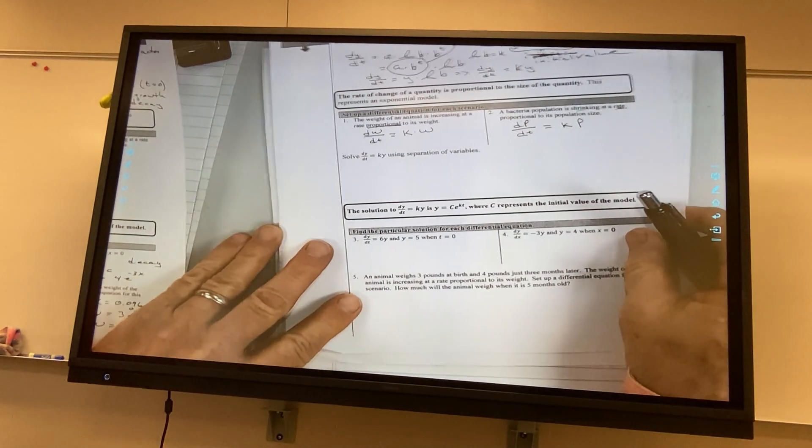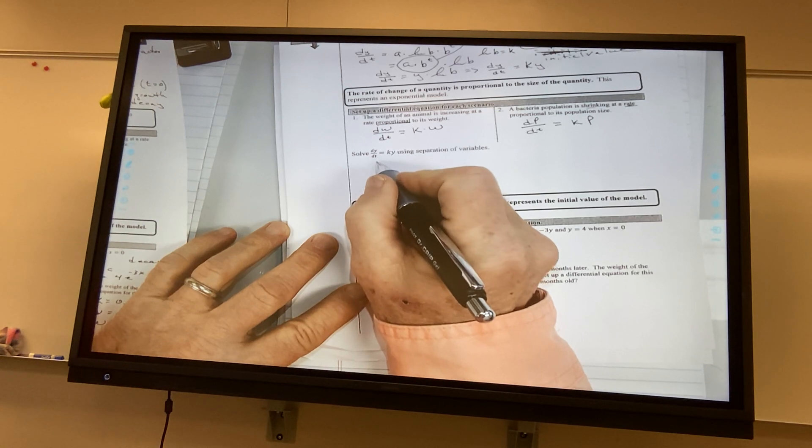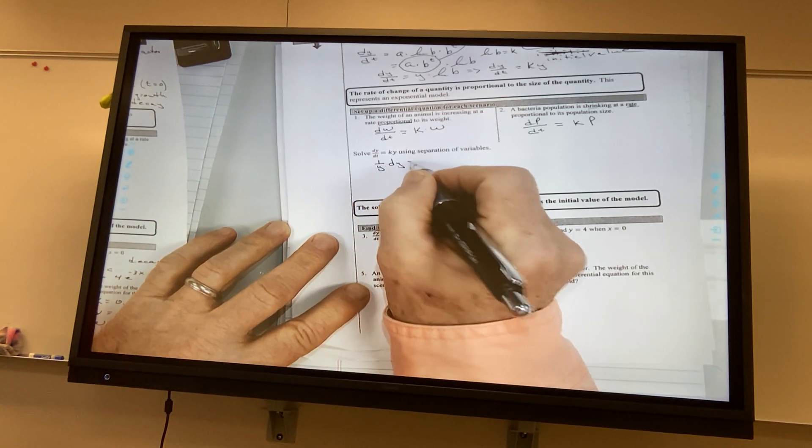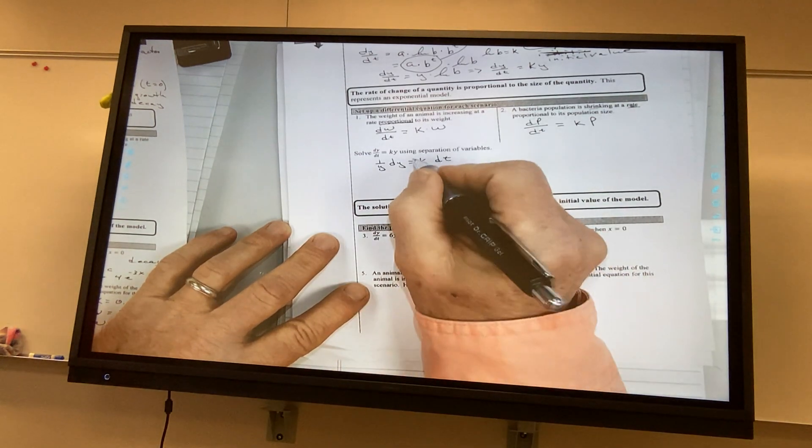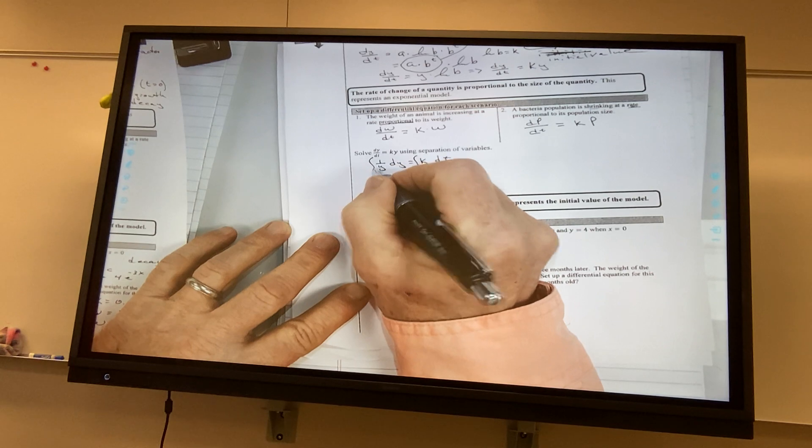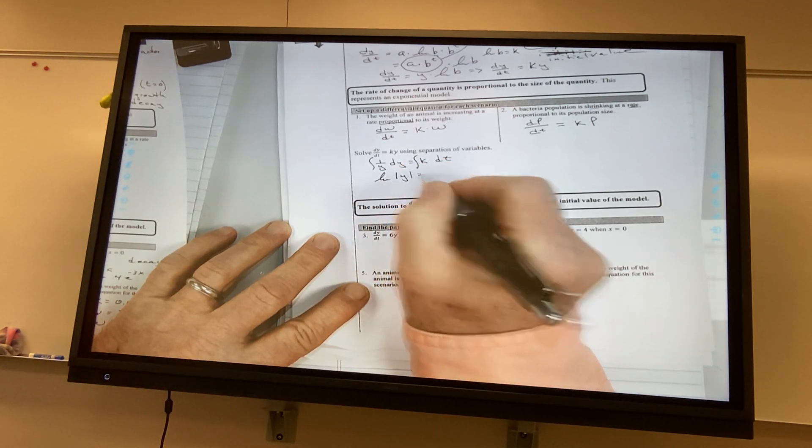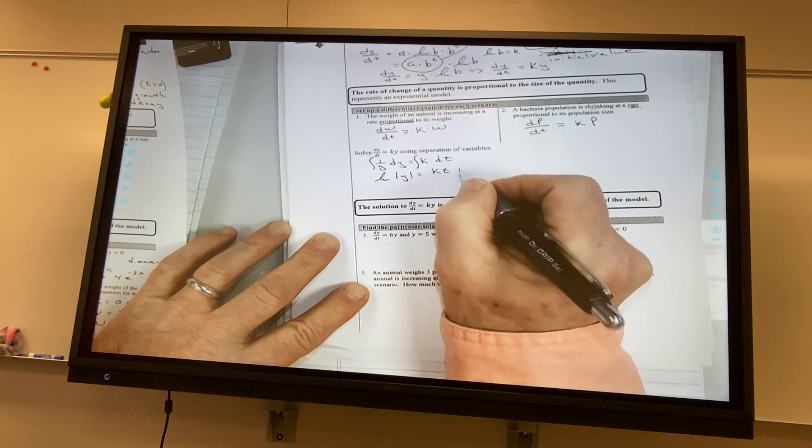I'm going to solve this using separation of variables. This is kind of what we just did a little while ago. I'm going to have 1 over y dy is equal to k dt. I'm going to integrate both sides. I'm going to get the natural log of the absolute value of y. Over here, I'm going to have kt plus c.